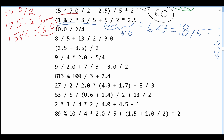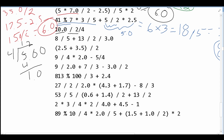Here we have 10.0 divided by 2, which gives us 5.0. Now we are dividing that by 4. Writing this out, we'll work through the long division with 1, 4, 10, 2, giving us 8 and 20. So basically, our answer here is going to be 1.25.